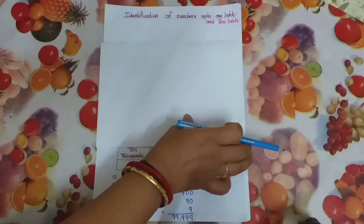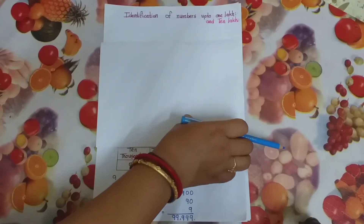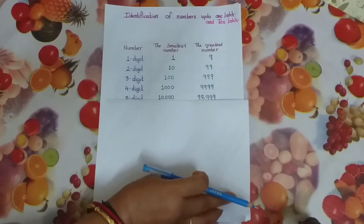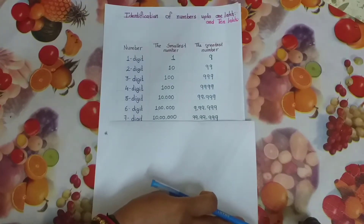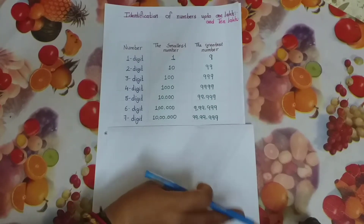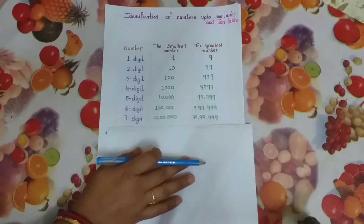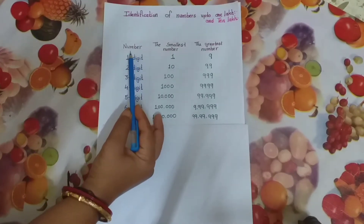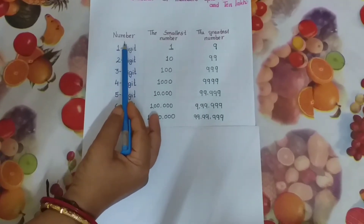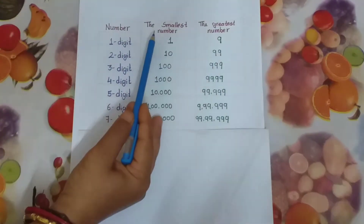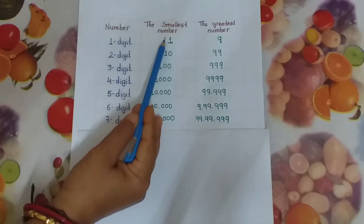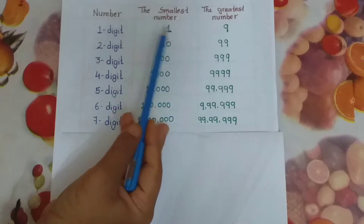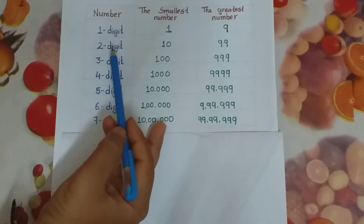First of all, we will look at one table. In this table, the first column is the number, the second column shows the smallest number and the greatest number.